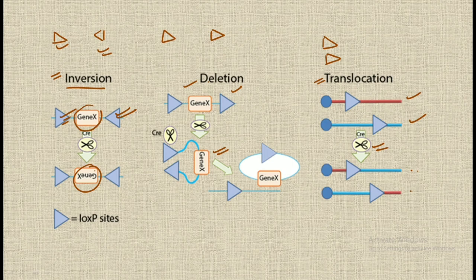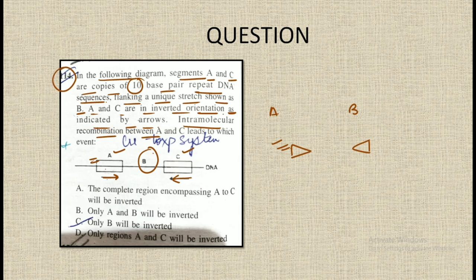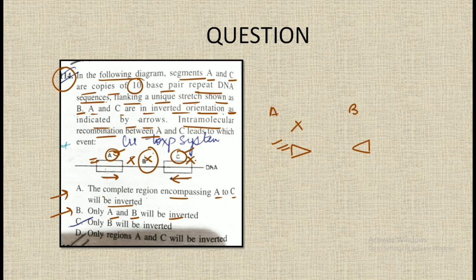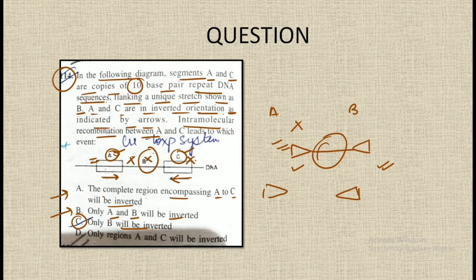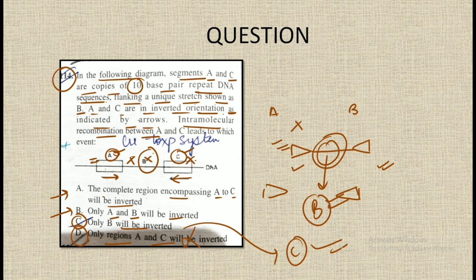Looking at the answer options: Option 1 says the complete region encompassing A to C will be inverted — incorrect, because the loxP sites themselves do not get inverted. Option 2 says only A and B will be inverted — also incorrect. Option 3 says only B will be inverted — this is correct, because with the two loxP sites facing each other, the Cre recombinase inverts only the gene in between, which is B. Option D says only A and C will be inverted — also incorrect. The correct answer is Option C.